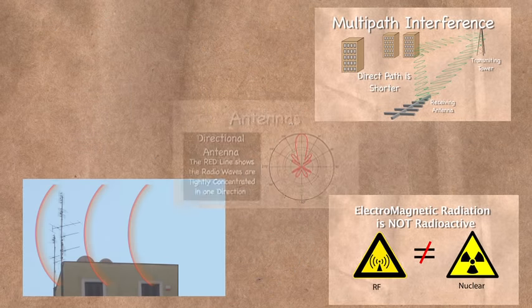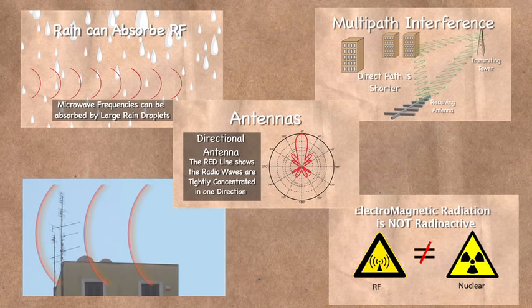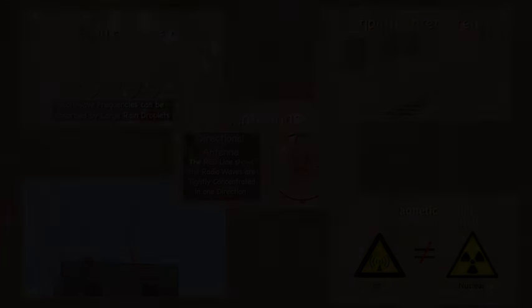This has been an overview of what radio waves are and how they travel and some of the obstacles they encounter on their way from the transmit antenna to the receive antenna.